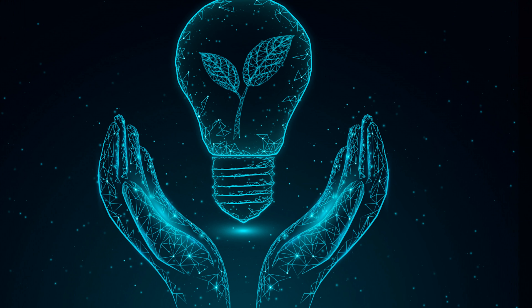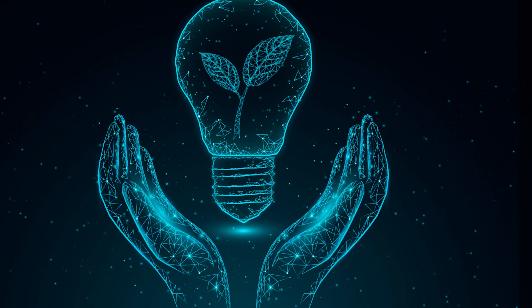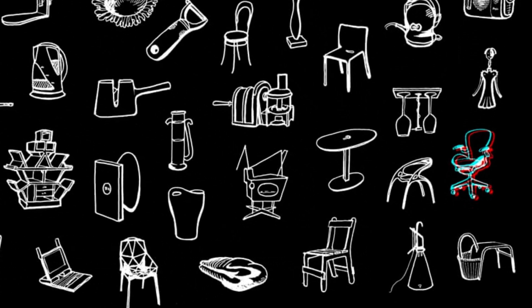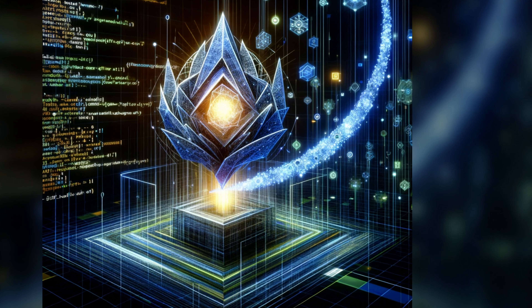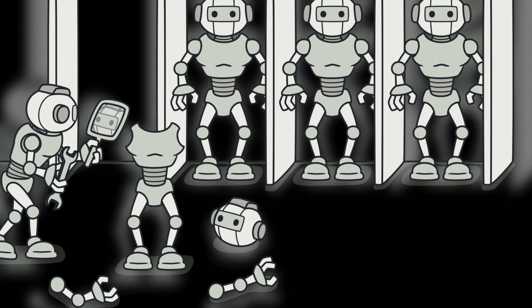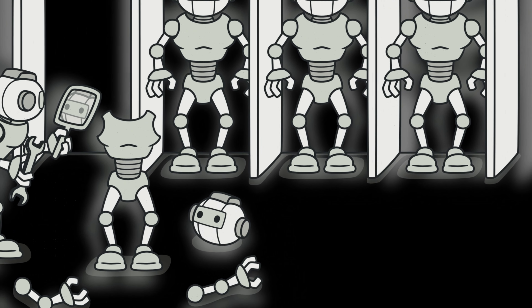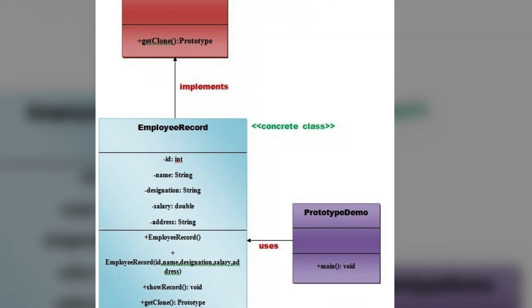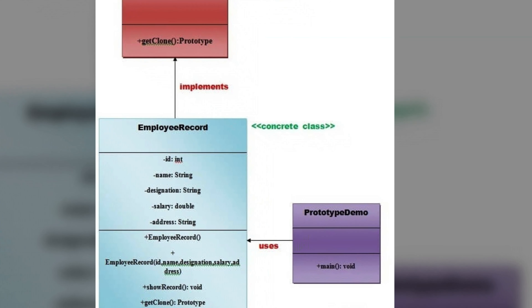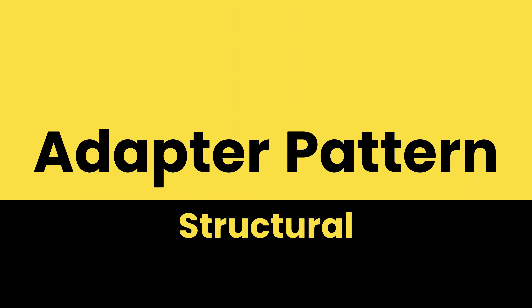As a technical example, think of it like a graphic design application where a user copies a complex graphic object that has already been created using the Prototype pattern. Once the exact copy is created, the user doesn't need to understand all the details that went into creating the original object. A typical use case is when the cost of creating an instance of a class is more expensive than cloning it.